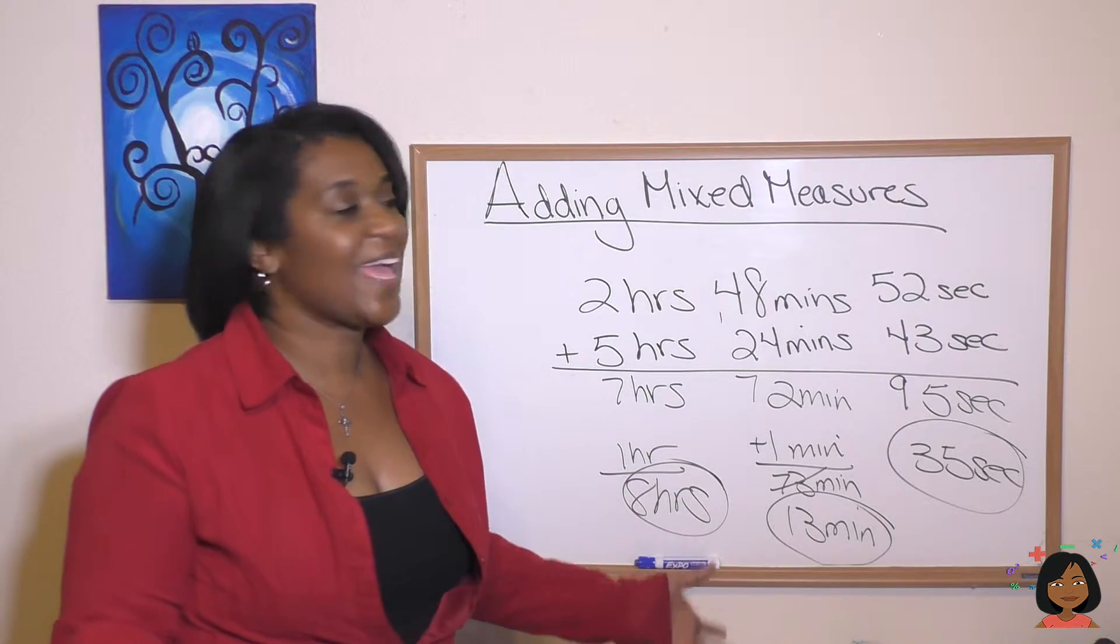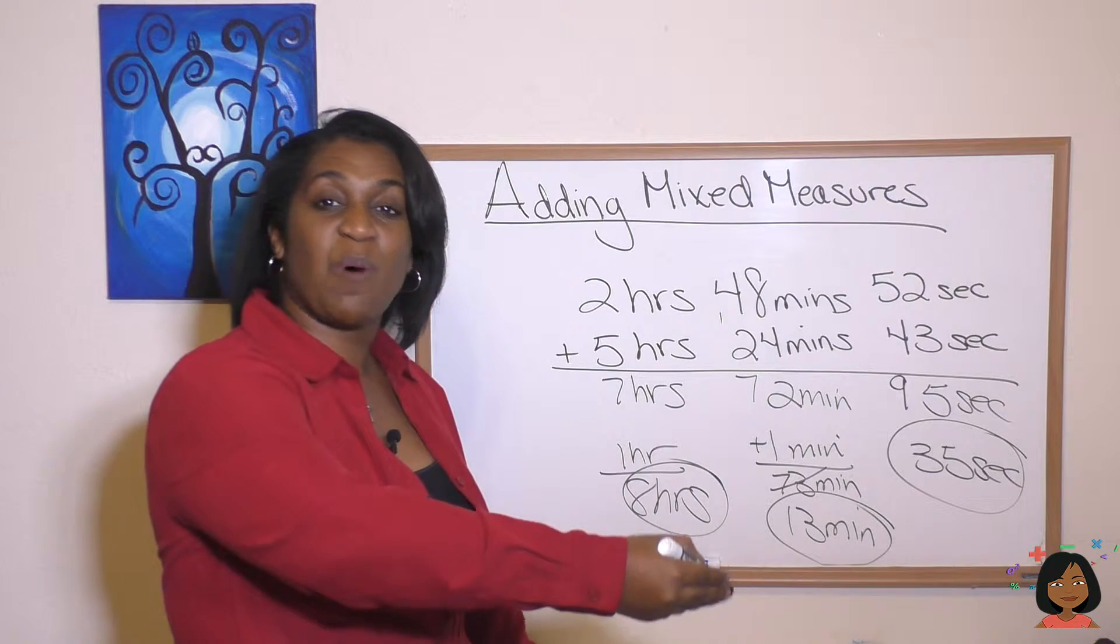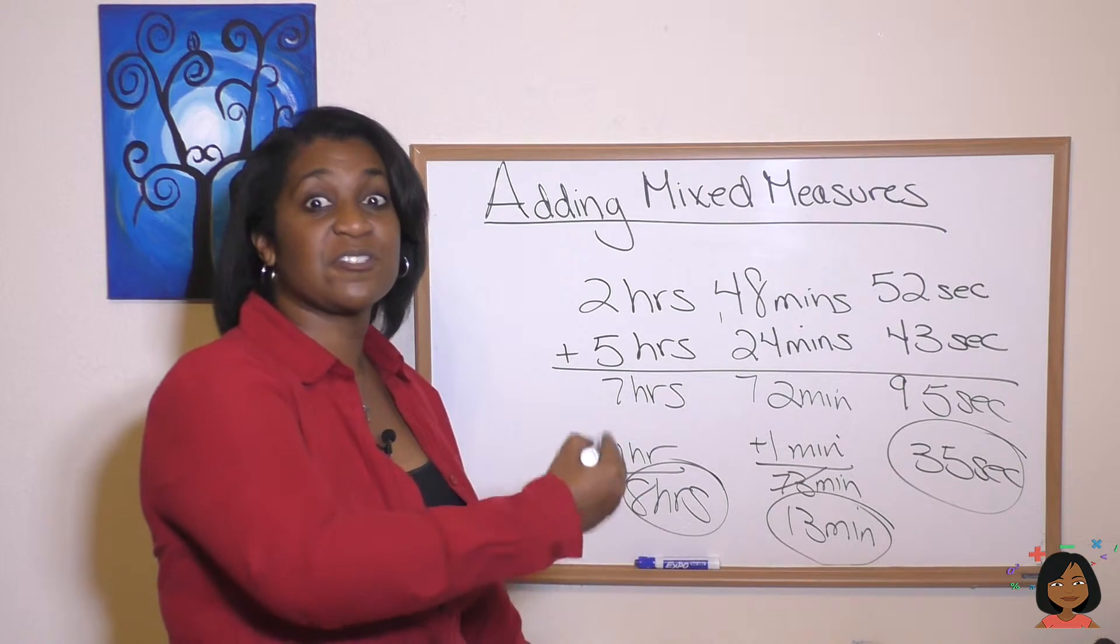And that's really it. Adding mixed measures is not bad at all. Just start with the smallest increment and do conversions as needed.